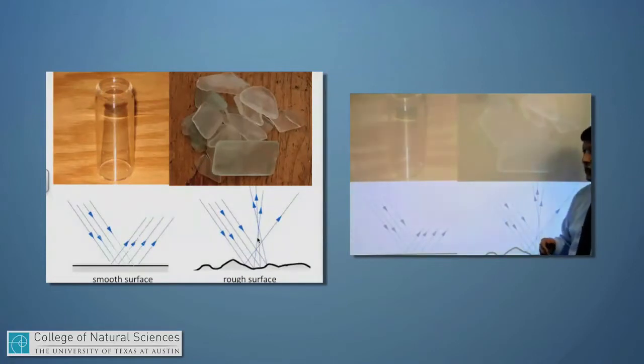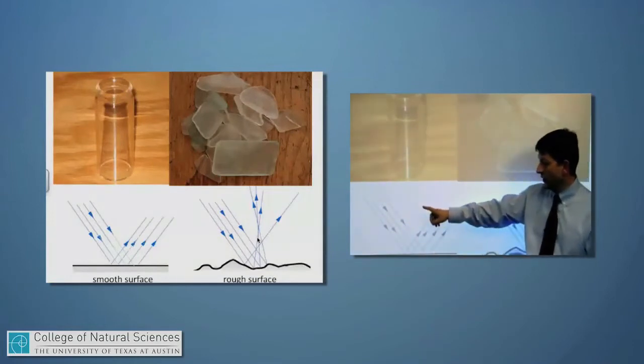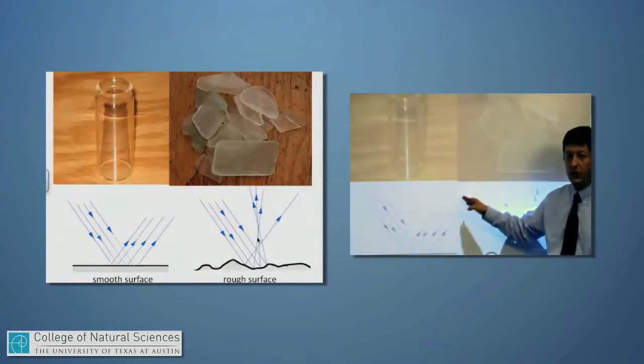Well, both surfaces are reflecting light because we're allowed to see that glass. It's just that the smooth surface, as it's obeying the law of reflection, light coming in at a single angle all leaves at a single angle.